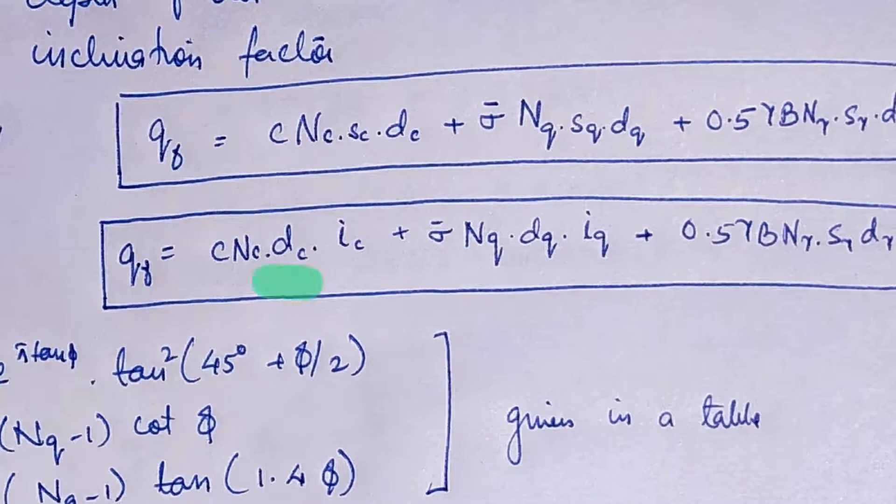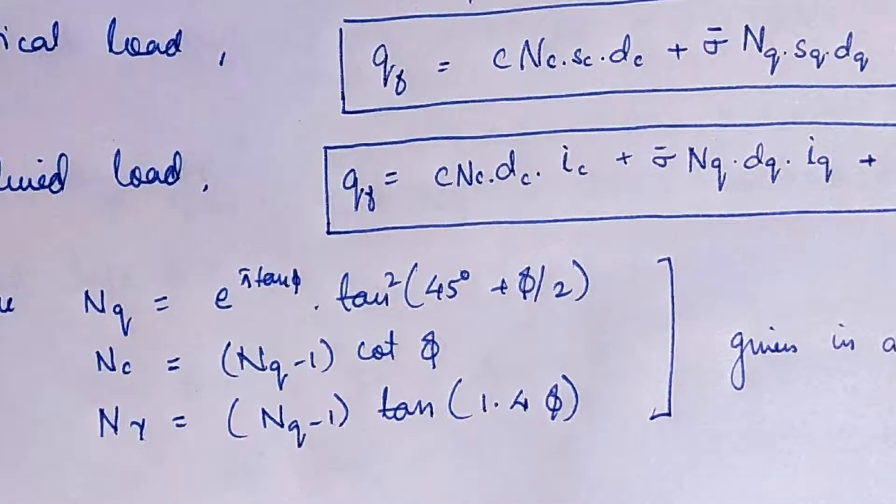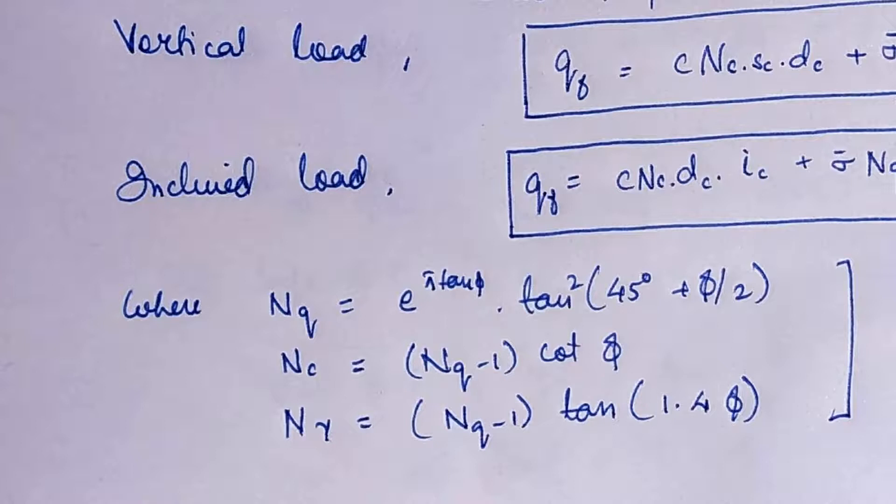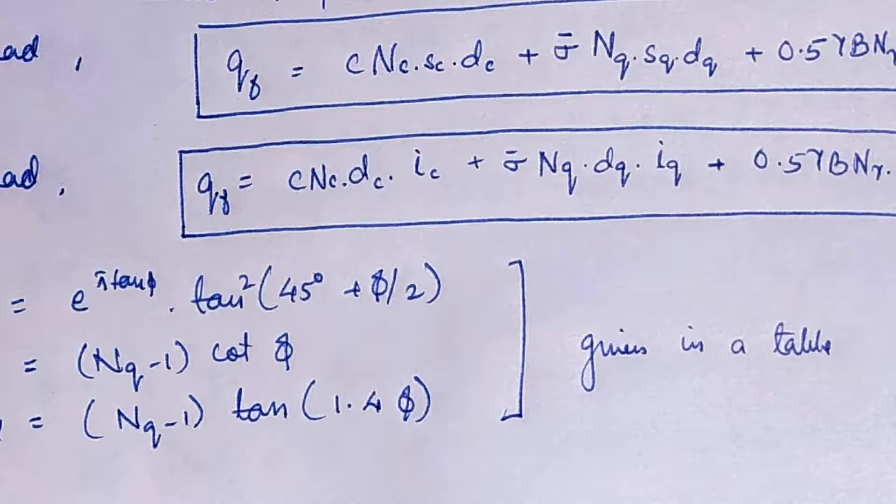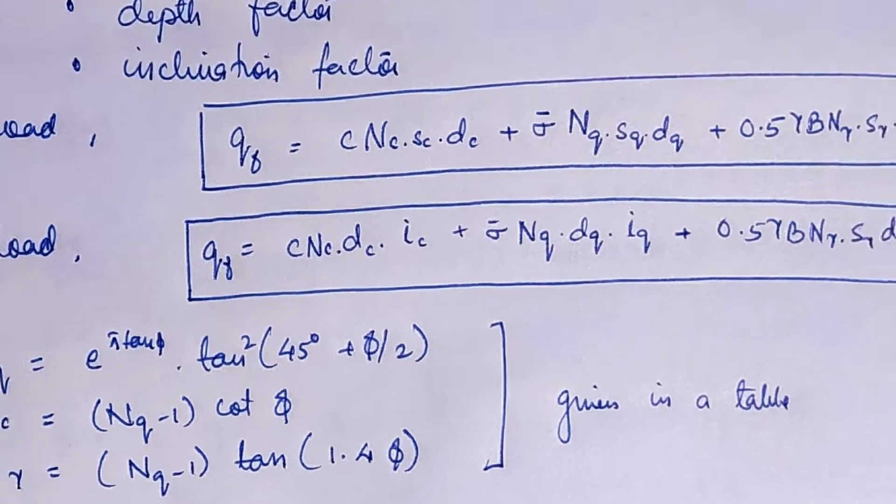DC is the depth factor and IC is the inclination factor. He gave these constants: NQ equals e raised to pi tan phi multiplied by tan squared (45 degrees plus phi by 2), NC equals (NQ minus 1) cot phi, and N gamma equals (NQ minus 1) tan(1.4 phi). These values are calculated for different values of phi and available in tabular form.